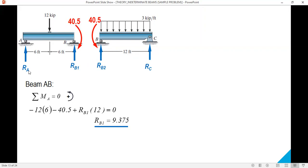To solve for RA, sum up forces in the vertical direction, and the value is 2.625 kips. Now for beam BC, you sum up moment about C and you can solve for RB2.